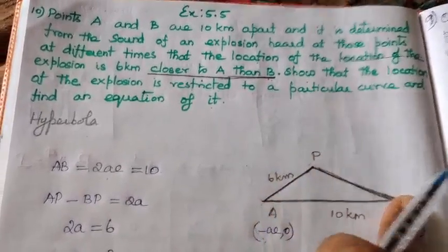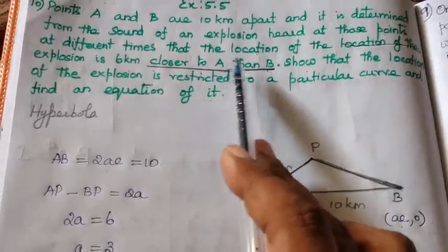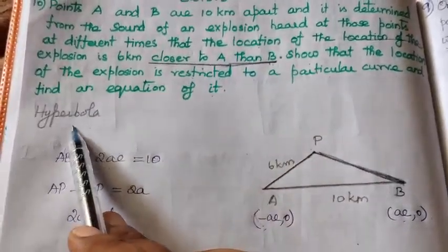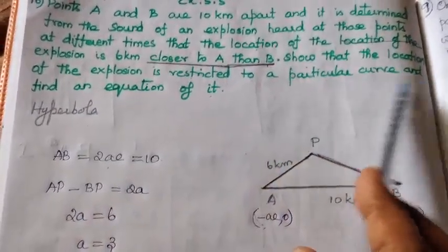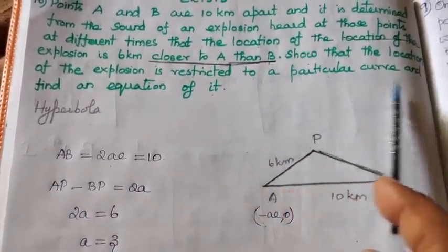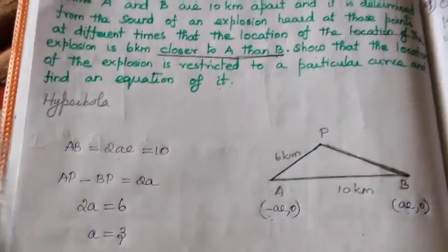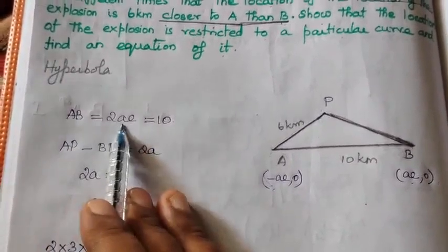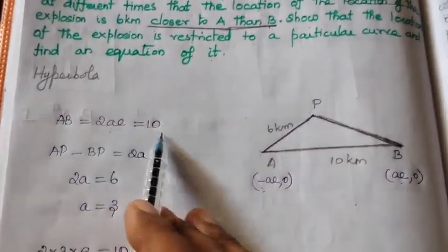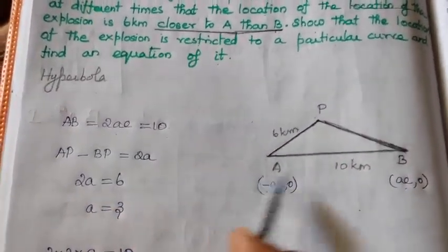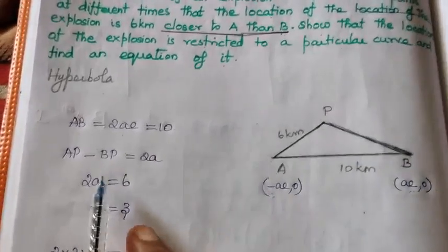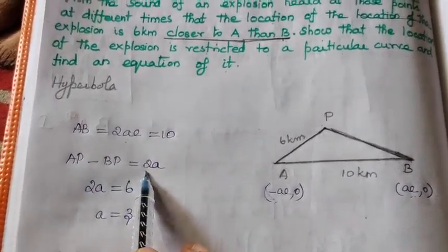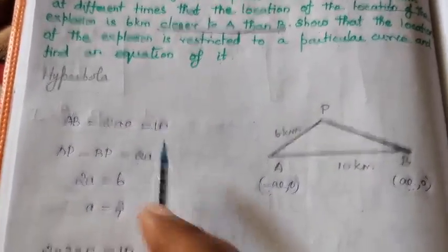The word 'closer than' is a clue — it indicates a difference, so this problem involves a hyperbola. We need to find the equation of the hyperbola. Here, AB equals 2ae, which equals 10, with foci at (-ae, 0) and (+ae, 0). The formula |PA minus PB| equals 2a was studied in exercise 5.2.